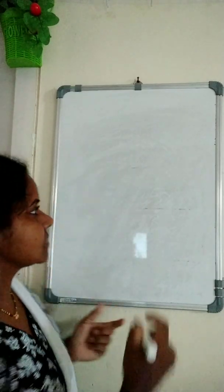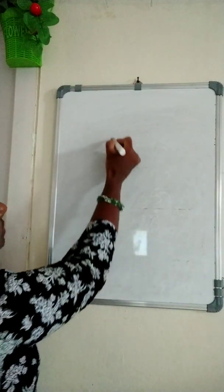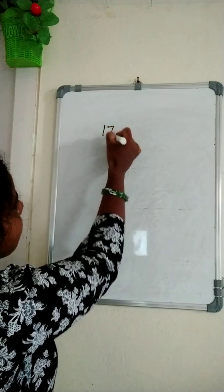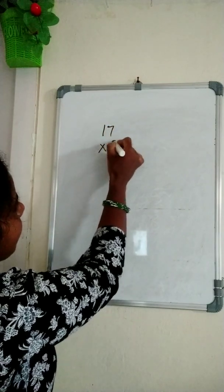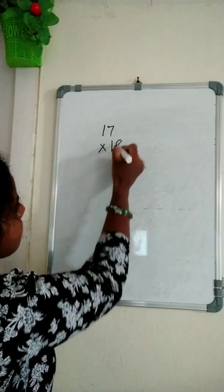20 tables up to 20 steps within a fraction of seconds. Suppose 17 eighteens.